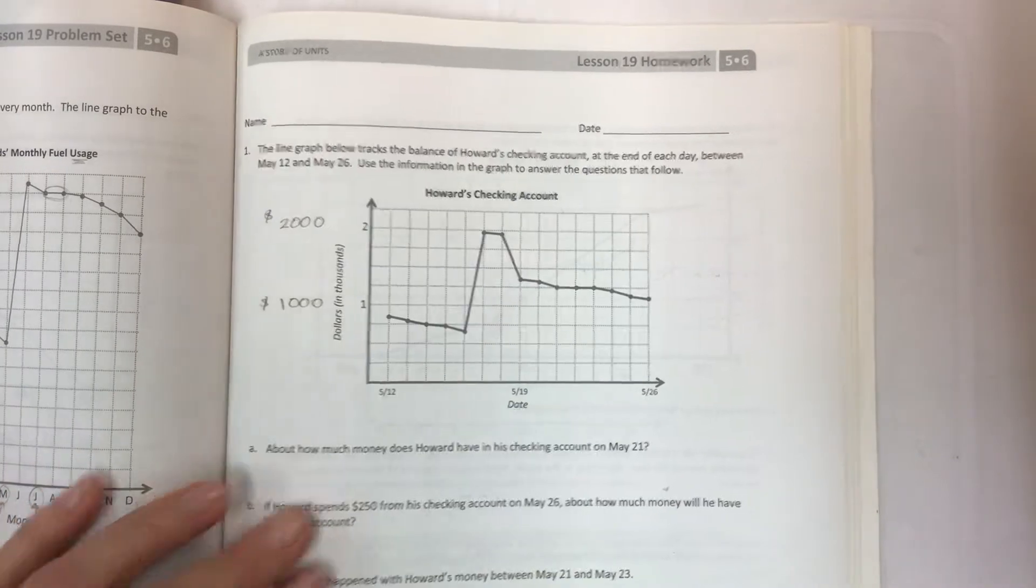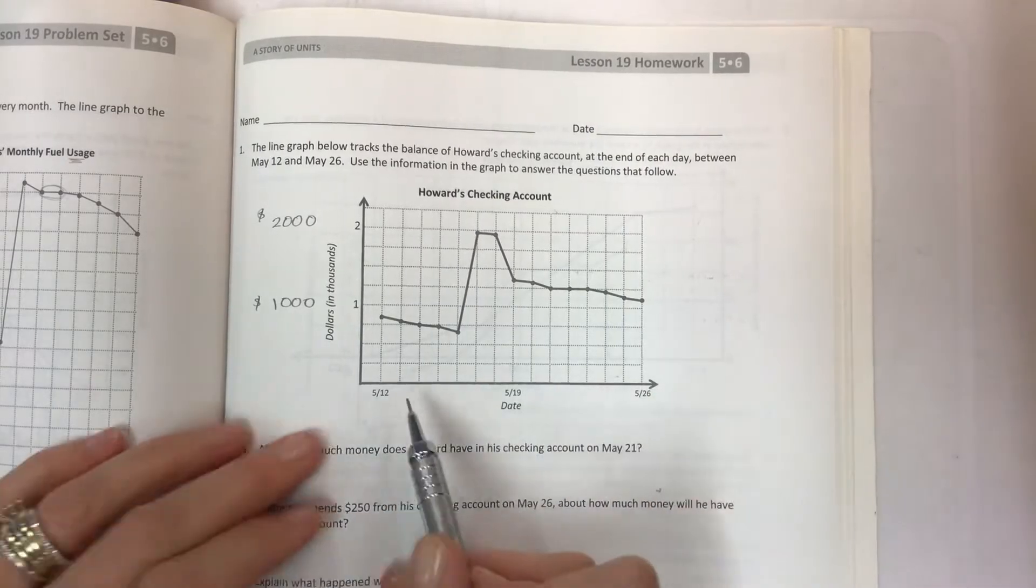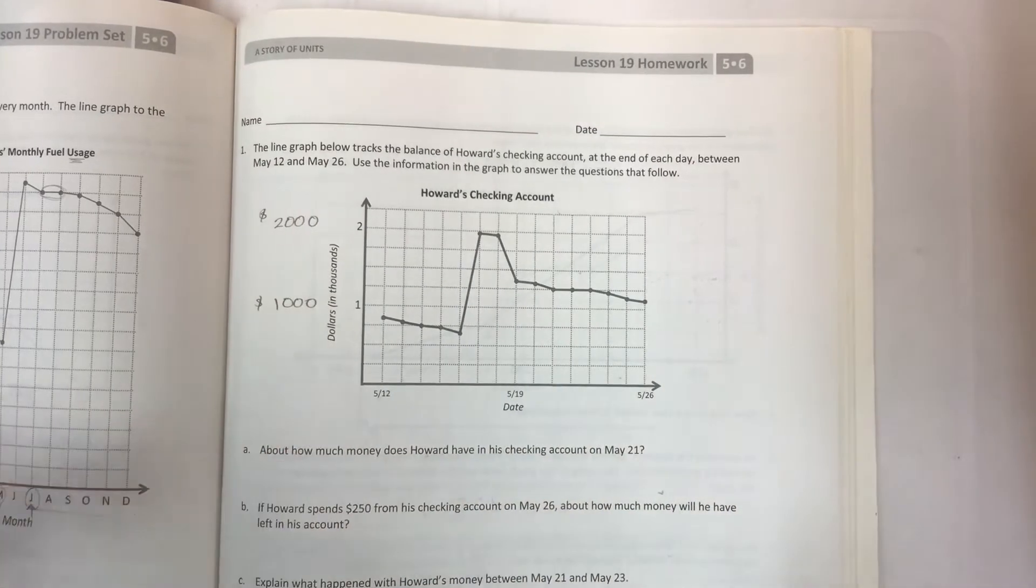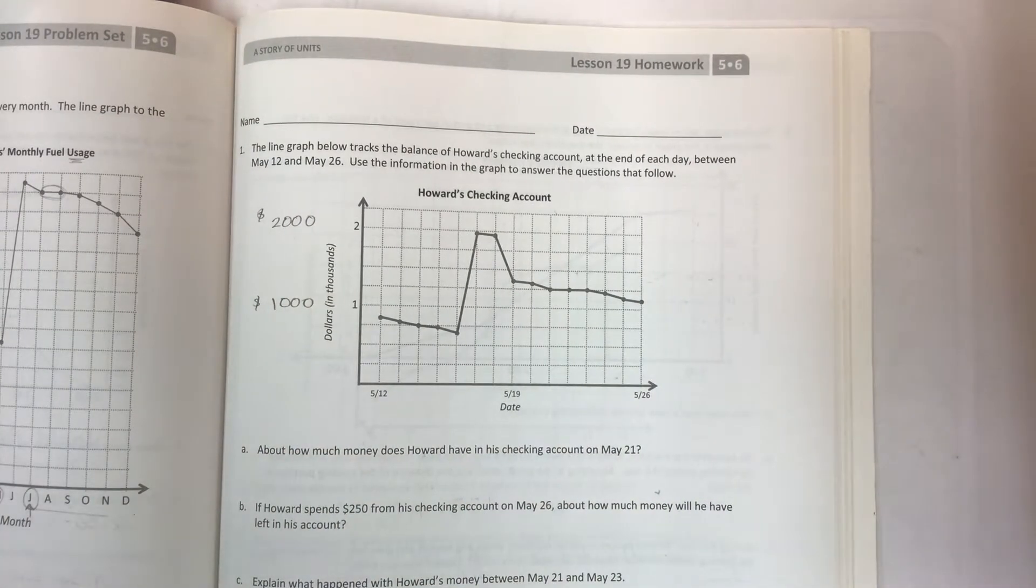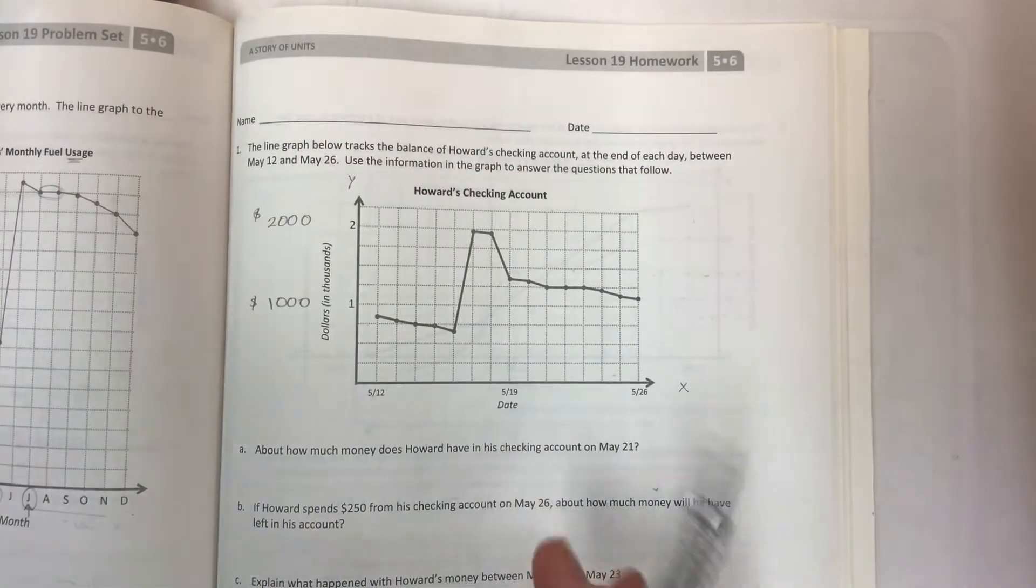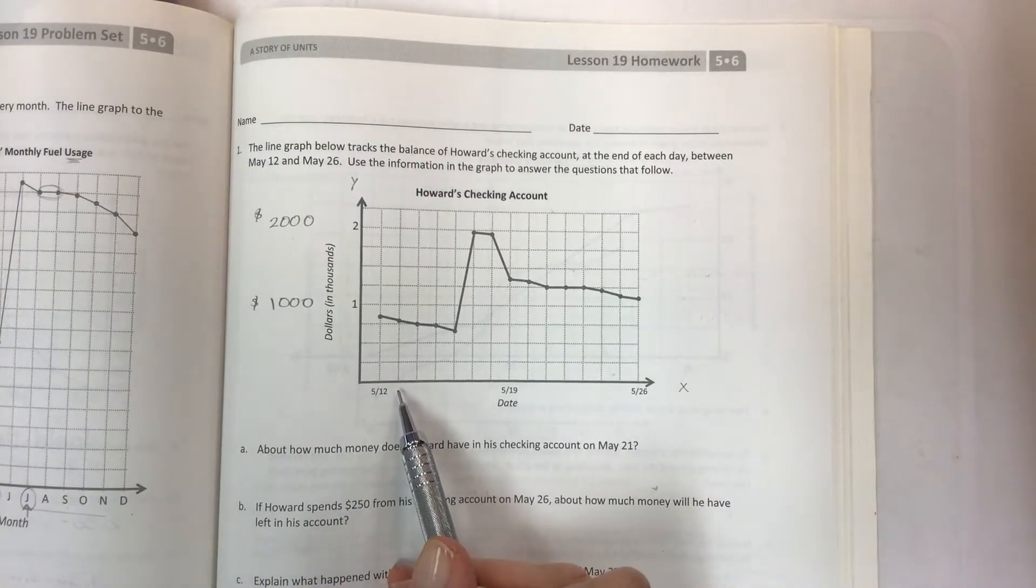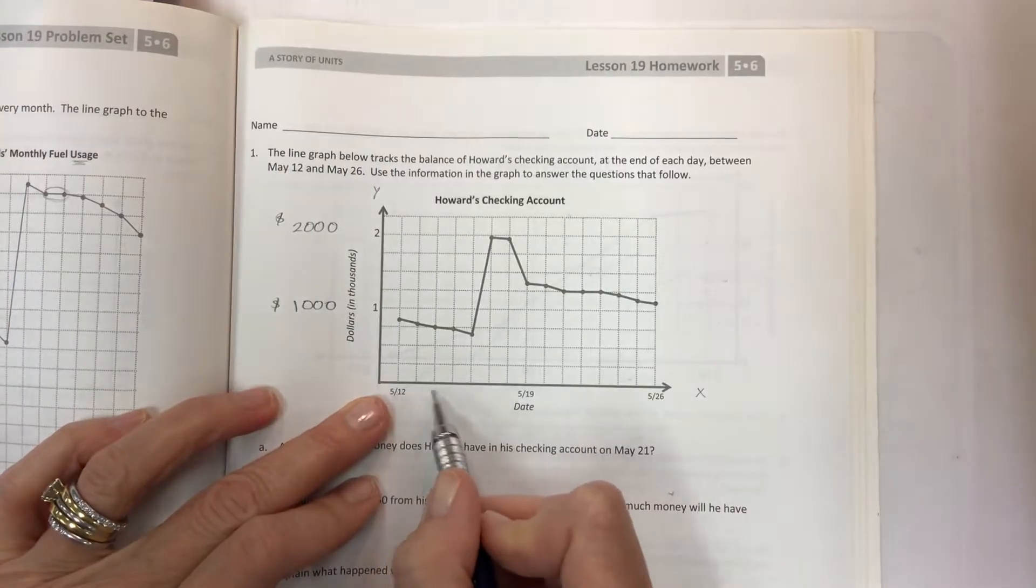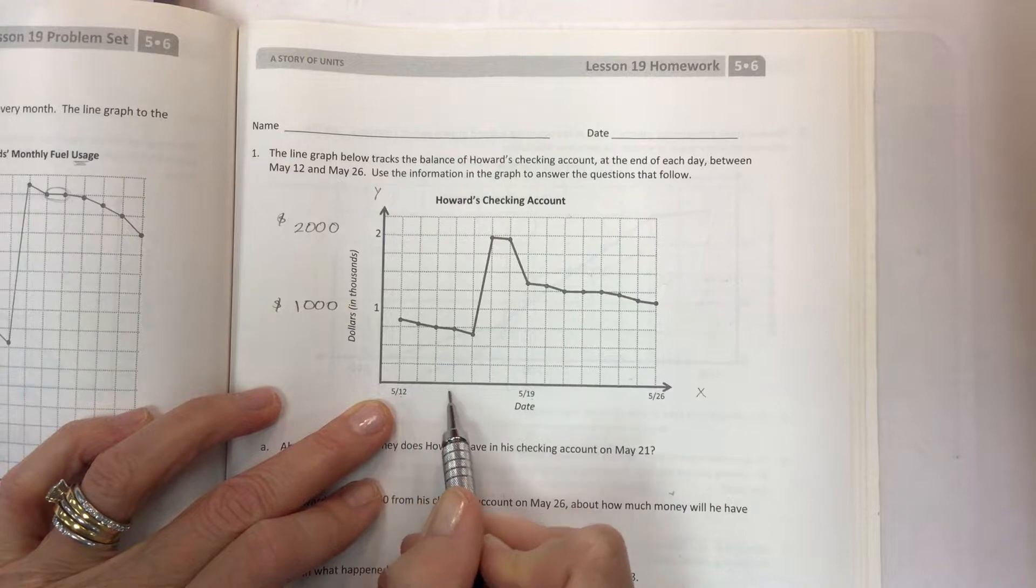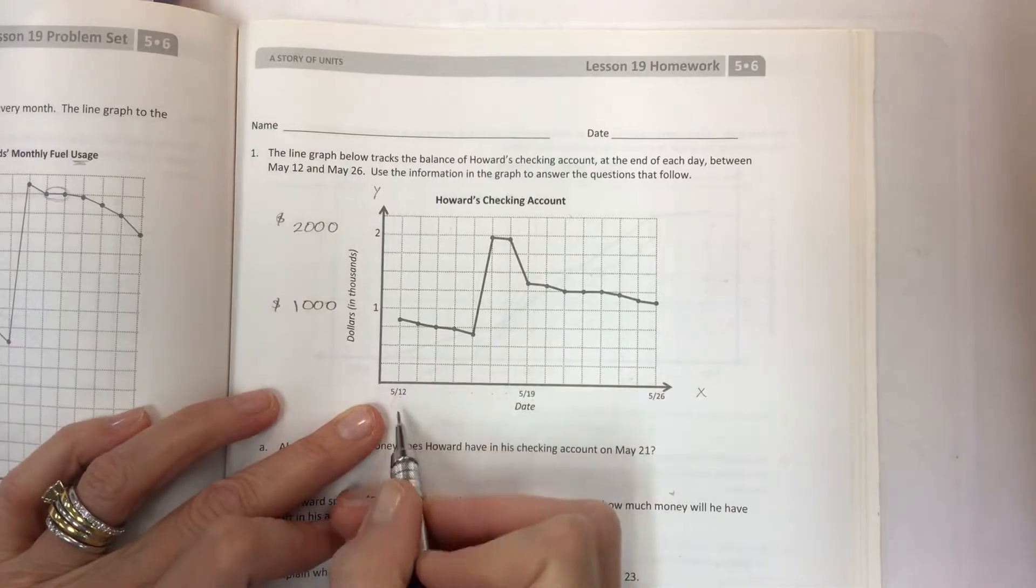About how much money does Howard have in his checking account on May 21st? What do you want to do? You want to look at this because it's a number line and you need to figure out each line that intersects the x-axis. Each line that intersects represents a day. You want to confirm that and make sure by counting between 12 and 19. 13, 14, 15, 16, 17, 18, 19. Yes, it's confirmed.